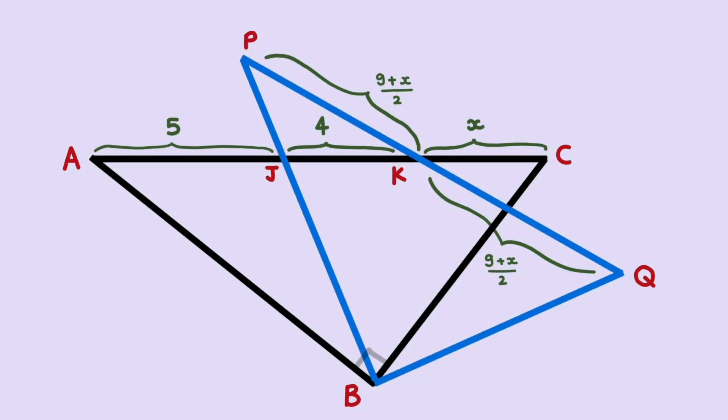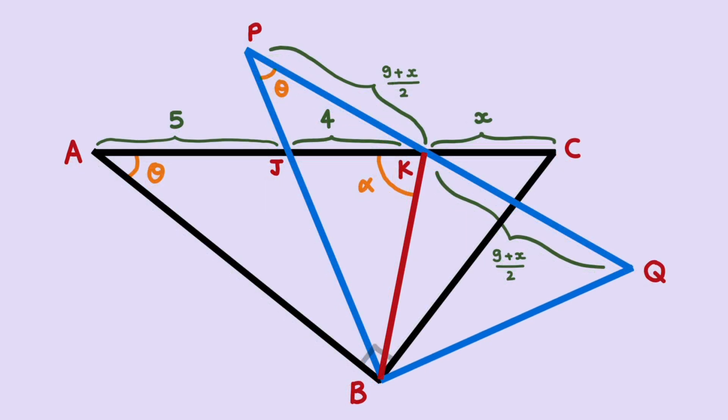Now we use the master step of the solution: we draw a line segment from point B to K. First, let us use the fact that the blue and black triangles are congruent. If we take angle A as theta, then angle P is also equal to theta. Let angle AKB equal alpha. The line segment BK is the most important segment in the solution. To find its length, we consider it inscribed inside right angle triangle PBQ, where K is the midpoint of the hypotenuse.